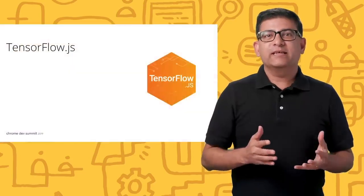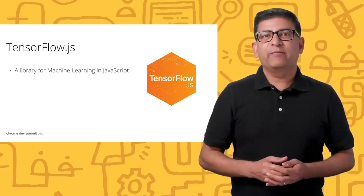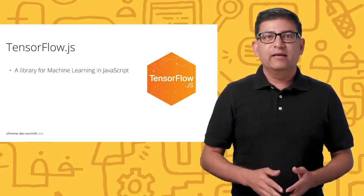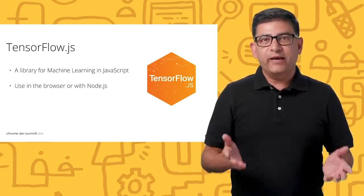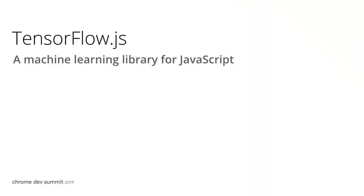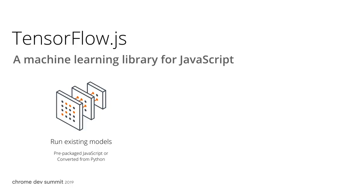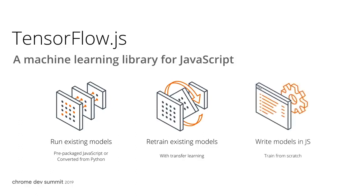All of these amazing examples have been made possible by TensorFlow.js. TensorFlow.js is an open source library for machine learning in JavaScript. It runs in a web browser and can also be used server-side and on many other platforms that support JavaScript. You can use TensorFlow.js in one of three different ways: you can run a pre-trained machine learning model in your application, customize a pre-trained model by retraining it on your own data, or use the lower-level Ops API to write a new model from scratch directly in JavaScript.